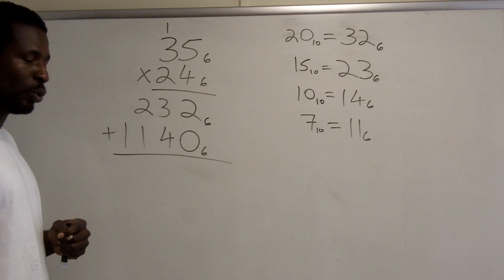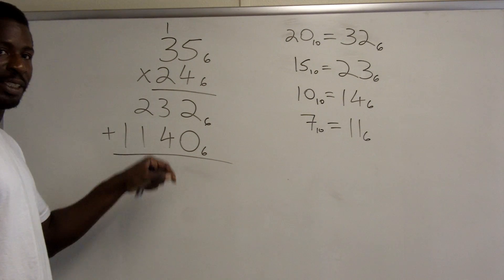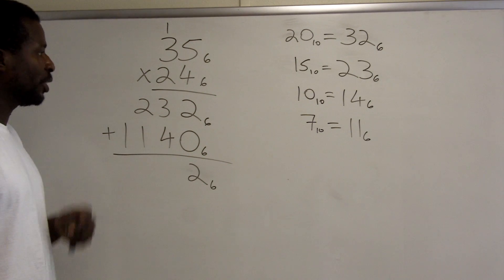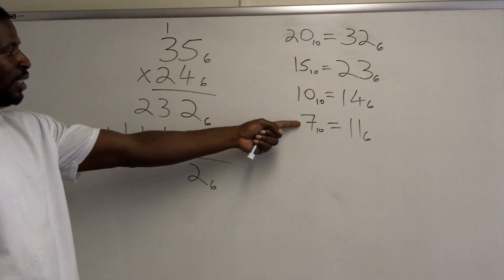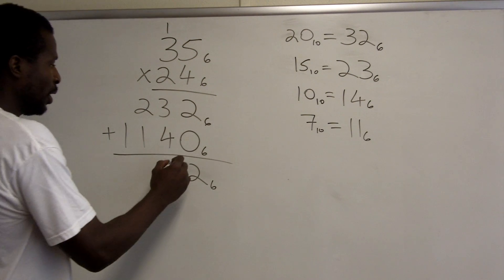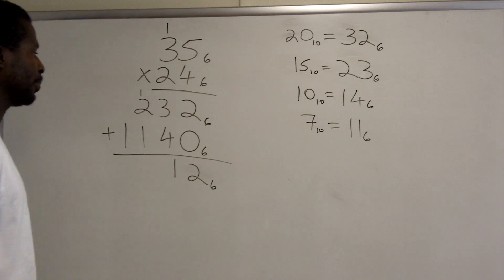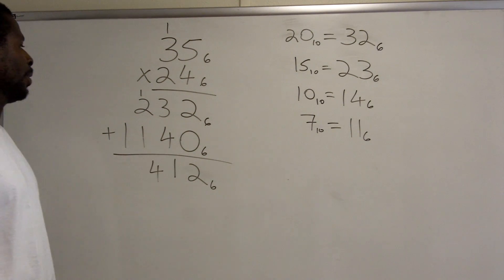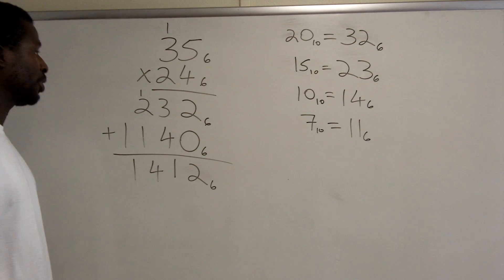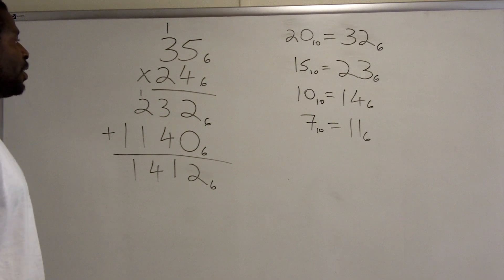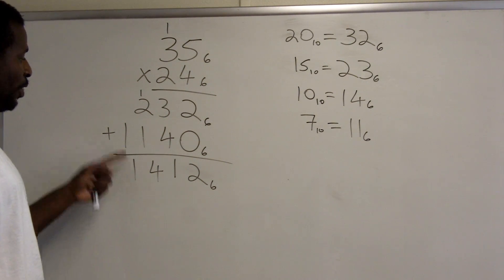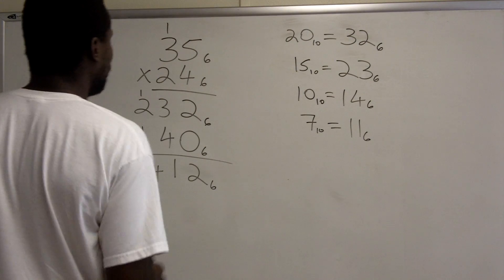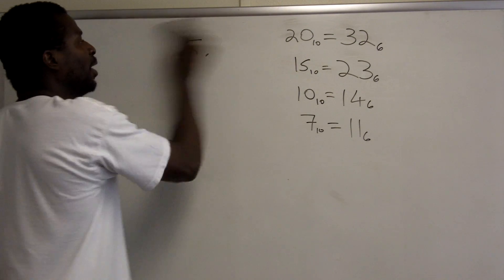Now for the addition step: 2 plus 0 is 2 — any number smaller than 6 is the same in base 10 and base 6. Then 3 plus 4 is 7 base 10, which is 11 base 6, so I record 1 and carry 1. Then 2 plus 1 plus 1 is 4, the same in both bases. Bringing down the 1, the product 35 base 6 times 24 base 6 is 1412 base 6.